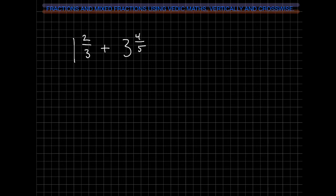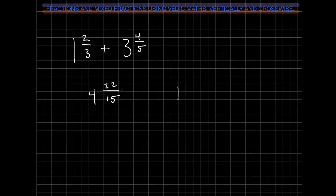Let's add mixed fractions. First, add the whole numbers: 1 plus 3 gives us 4. Next, add the fraction portion using vertically and crosswise: 2 times 5 plus 4 times 3. That's 10 plus 12, giving us 22. For our denominator, 5 times 3 is 15. We have a top-heavy fraction, so we convert: 15 goes into 22 one time, and 22 minus 15 is 7. So 22 over 15 gives us 1 and 7 fifteenths. Adding that to our whole number, our final answer is 5 and 7 fifteenths.